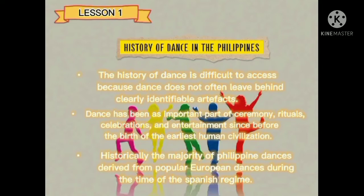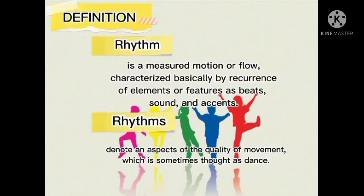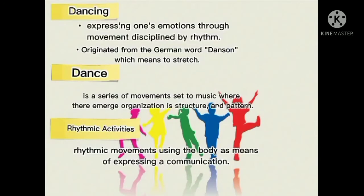An example of European dances is Fandango sa Ilaw. Rhythm means a measured motion or flow characterized basically by recurrence of elements or features such as beats, sound, and accents. Rhythmic activities are the note and aspects of the quality of movement, sometimes thought of as dance. Dancing means expressing one's emotion through movement disciplined by rhythm. The word dancing originated from the German word 'danson,' which means to stretch. Dance is a series of movements set to music where organization is structured and patterned. Rhythmic activities involve rhythmic movements using the body as a means of expressing communication.